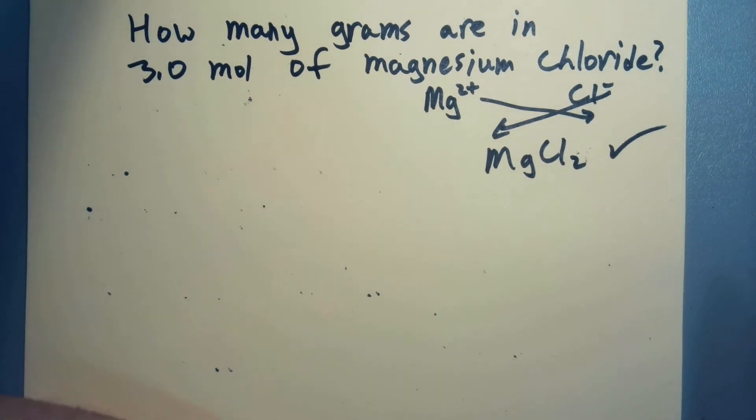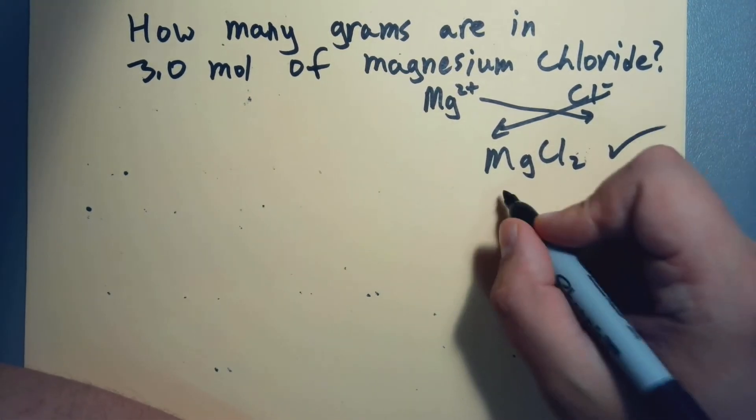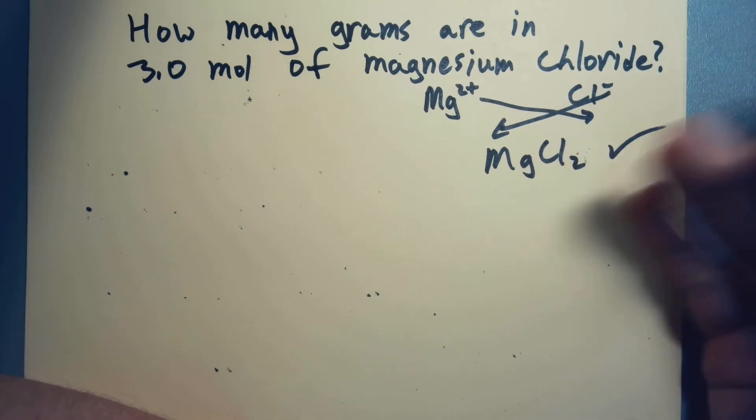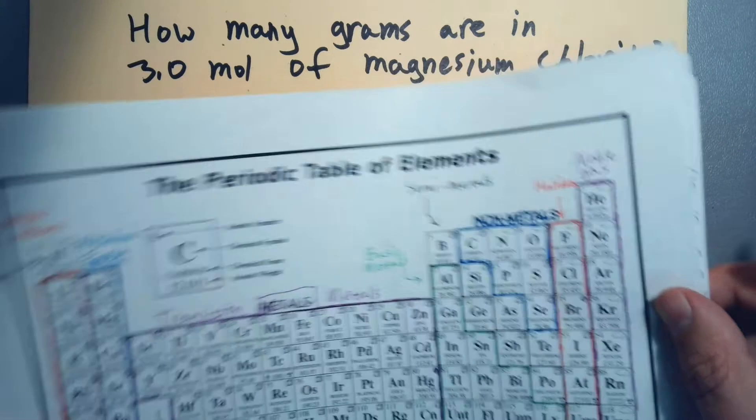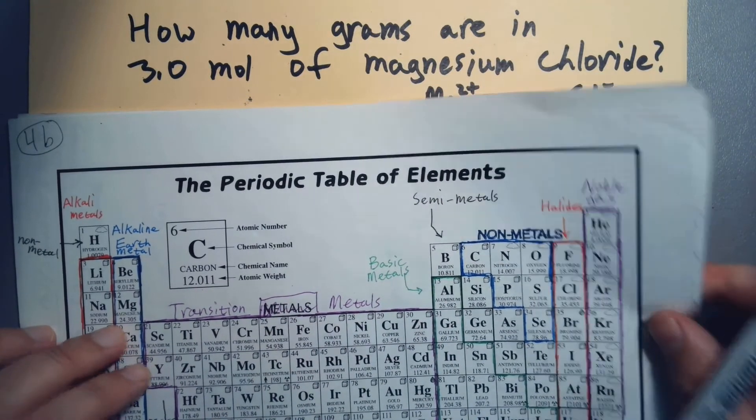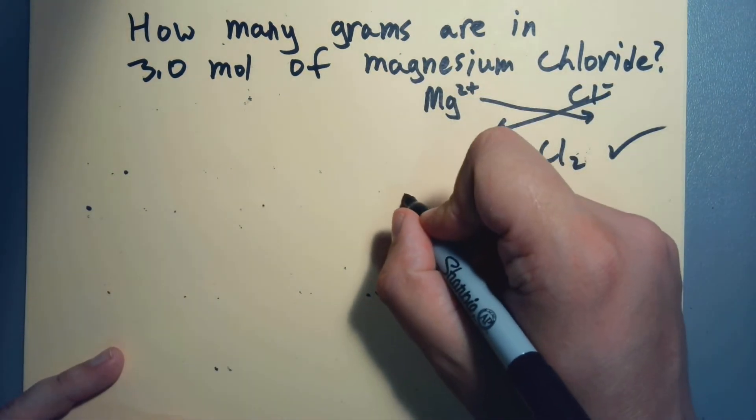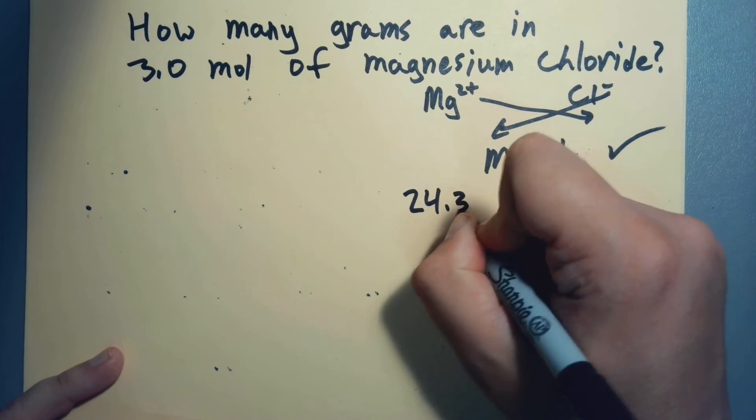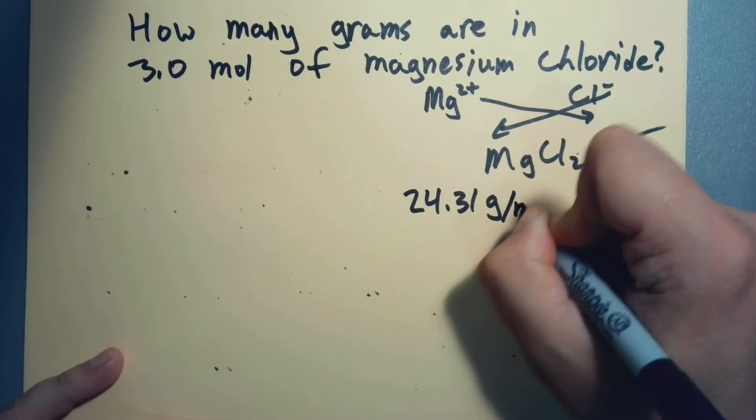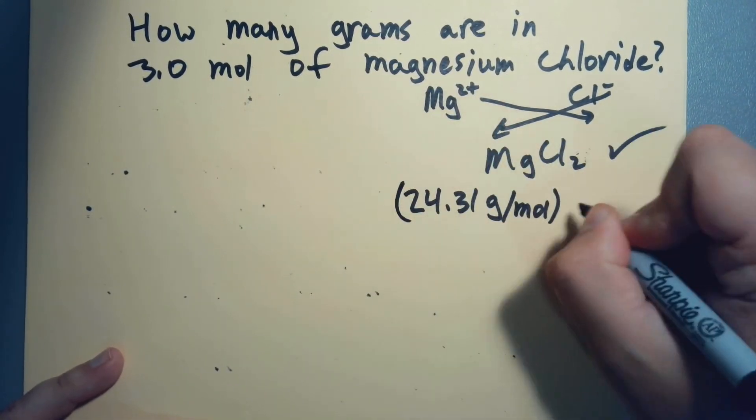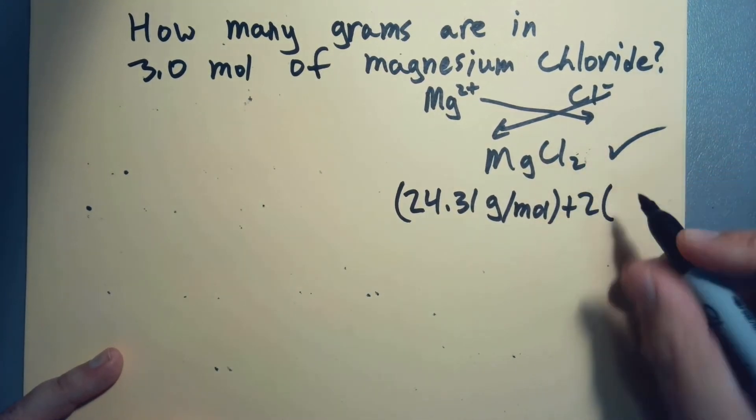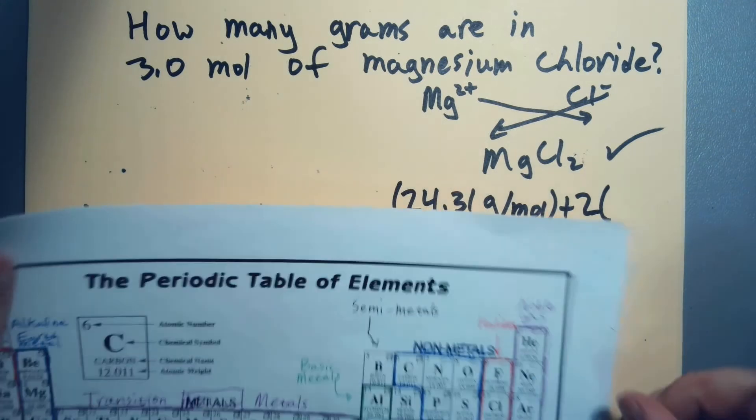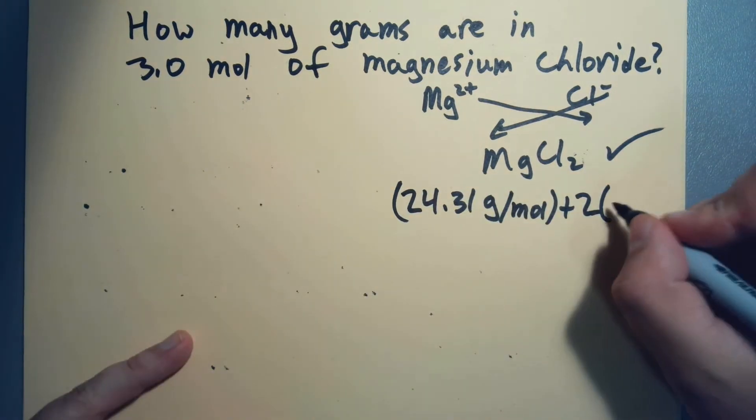What's the molar mass of MgCl2? We know we're going to need that, might as well work it up now. Well, I've got one magnesium - that's 24.31 grams per mole - and I'm going to add to that two chlorines, so two times the molar mass of chlorine, which is 35.45 grams per mole. Always good to write the units - helps prevent mistakes later.